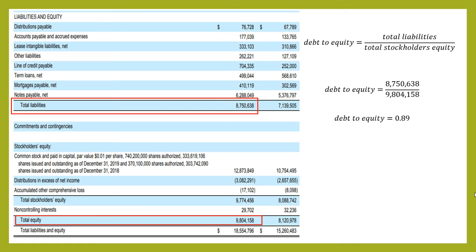So you do the division: you substitute in your total liabilities on the top, you take your total equity and put it on the bottom, and that gives you a debt to equity of 0.89. This means there is 89 cents of debt for every dollar of equity. Sometimes it's helpful to present it as a percentage — so this is a debt to equity of 89%.